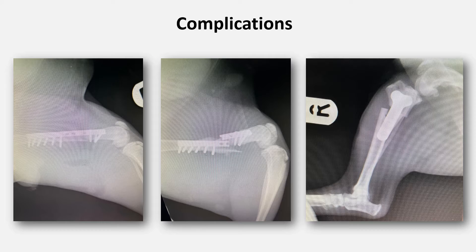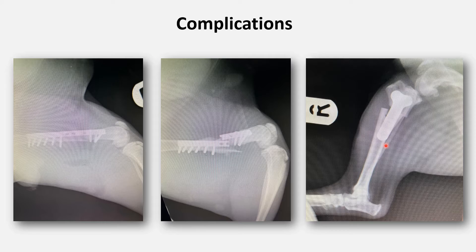The images here, although not of IM pins or external skeletal fixation, illustrate the catastrophic consequences of implant failures. The plated femoral fracture on the left has failed due to incorrect use of plating technology for this particular type of fracture. And the tibia on the right has failed partly due to a lack of owner compliance, but partly due to a fracture developing through an unseen drill hole underneath the plate.